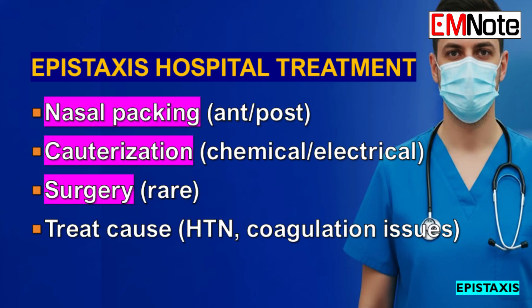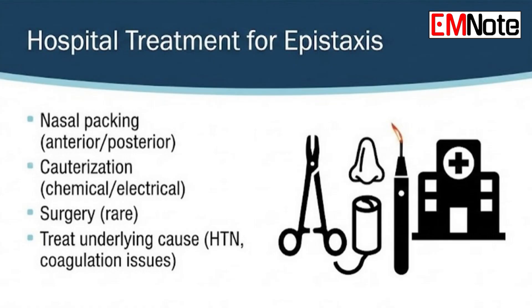If even that fails, we're talking about surgery. For refractory posterior bleeds, the gold standard now is endoscopic sphenopalatine artery ligation — you go in through the nose with the scope, find the artery as it exits the pterygopalatine fossa, and clip it. It has a success rate over 95%, much better than the old external approaches.